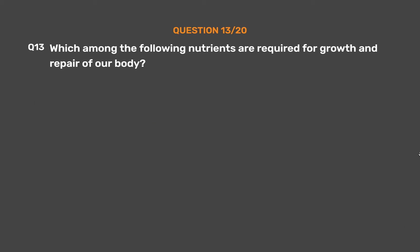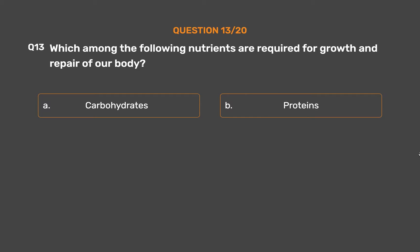Question number 13. Which among the following nutrients are required for growth and repair of our body? Option A - Carbohydrates, Option B - Proteins, Option C - Fats, Option D - Minerals.